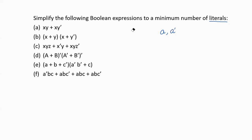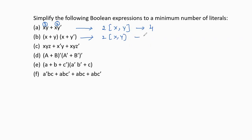Now let us count the number of input variables and the number of literals for the given Boolean expressions. For the first expression, the number of input variables are 2 only: x and y. The number of literals is 4 — for the first product we have 2 literals, and again 2 literals. For the second Boolean expression, we again have 2 input variables x and y, and 4 literals total.